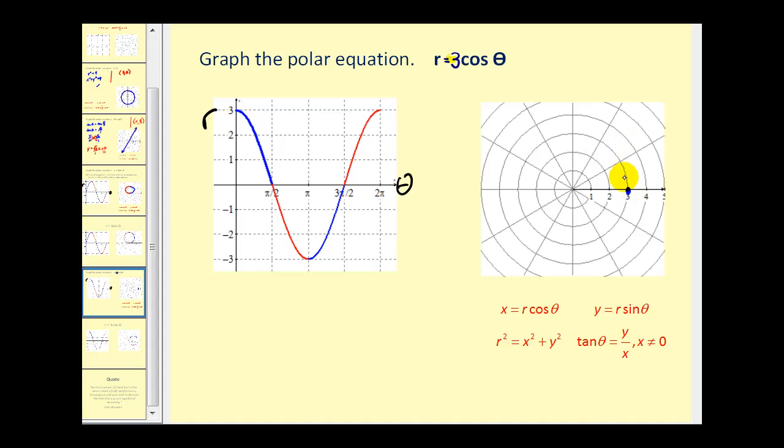So as theta approaches pi over two, r approaches zero. Then from pi over two to pi radians, notice that the r value is negative. We're not actually plotting points here, but in the opposite direction. We're in the fourth quadrant. So the radius starts at zero and increases to three.